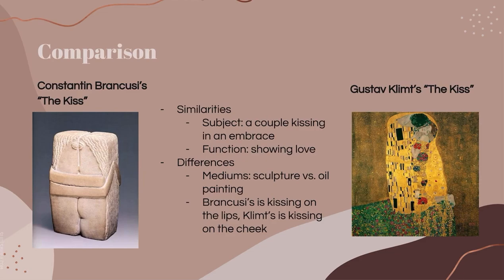The differences between the two are the mediums. Brancusi's is a limestone sculpture, while Klimt's piece is a painting with oil paint and gold leaf. In Brancusi's, the couple is kissing on the lips, whereas in Klimt's, the man is kissing the woman on the cheek. Gustav Klimt's also has much more color and a lot more going on compared to Brancusi's.